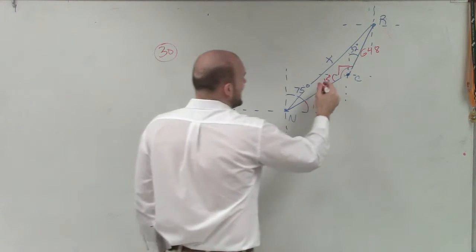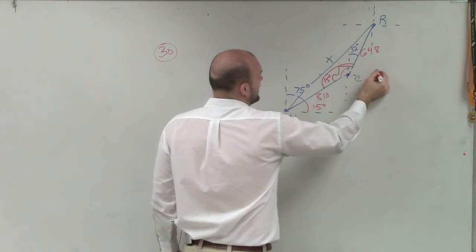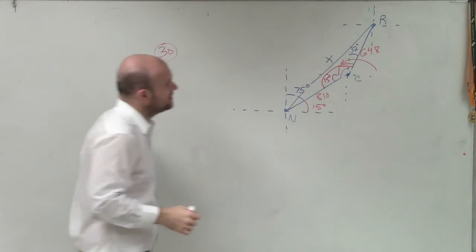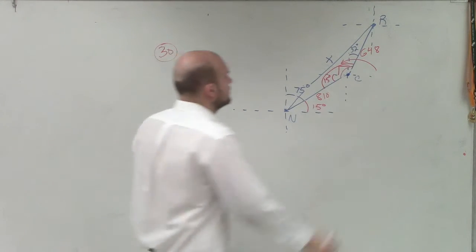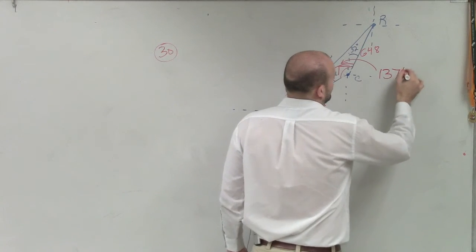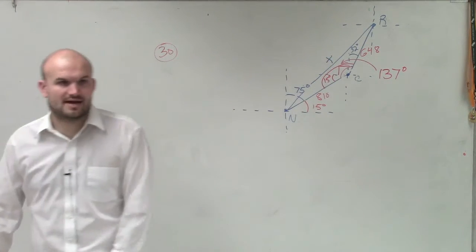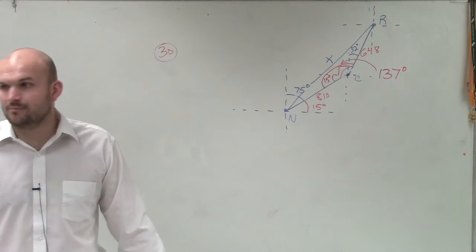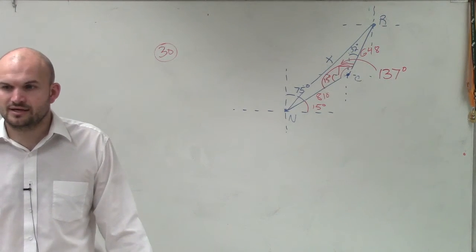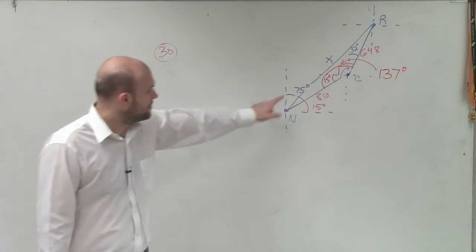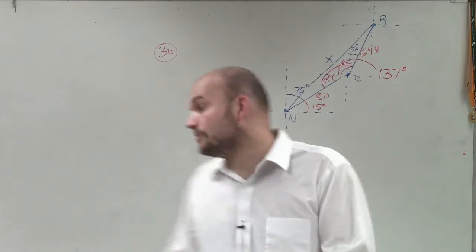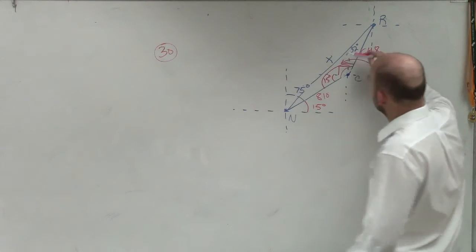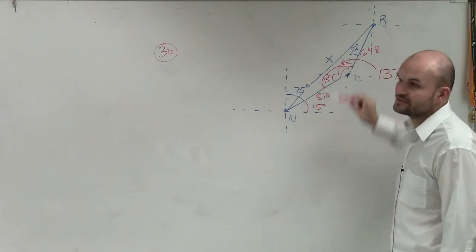Therefore, this whole angle from there to there ends up being 32 plus 90 plus 15, or 137. Anybody have any questions on how I got to that? Just basic math so far. I haven't even done anything yet. I added 32 degrees plus 90 degrees plus 15 degrees.